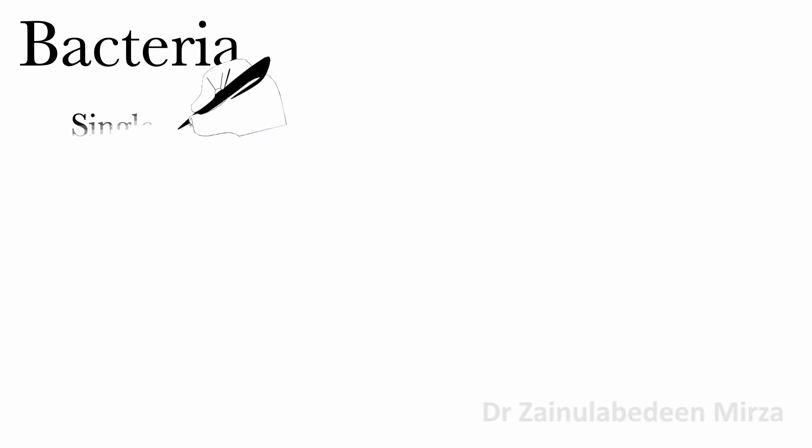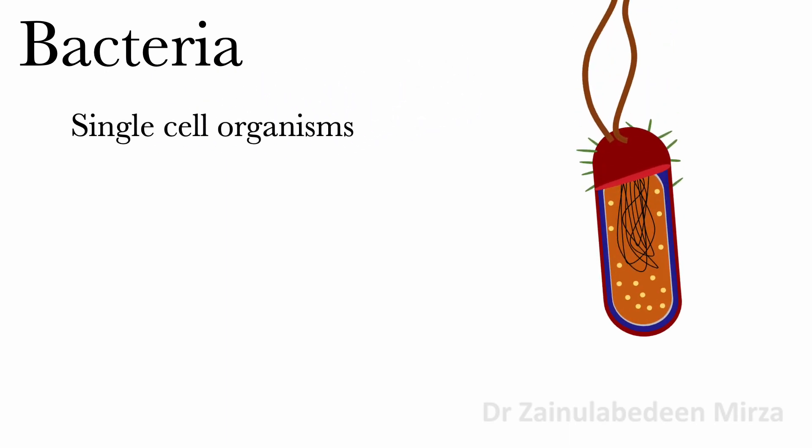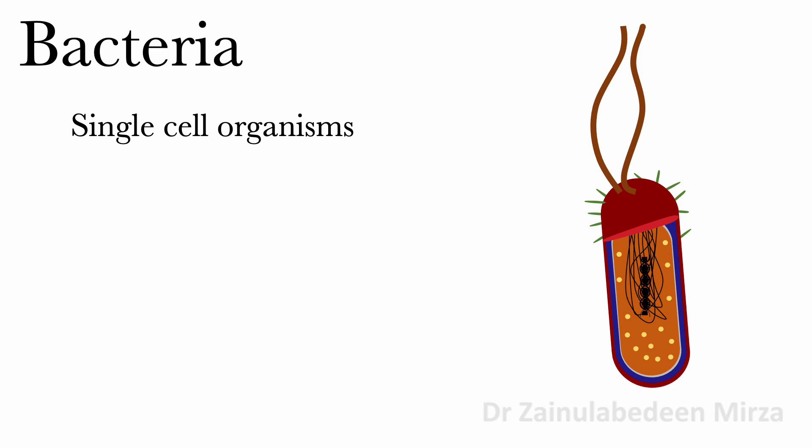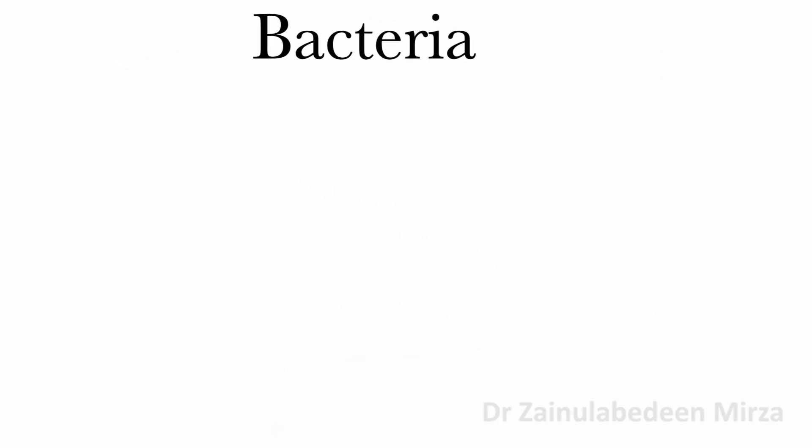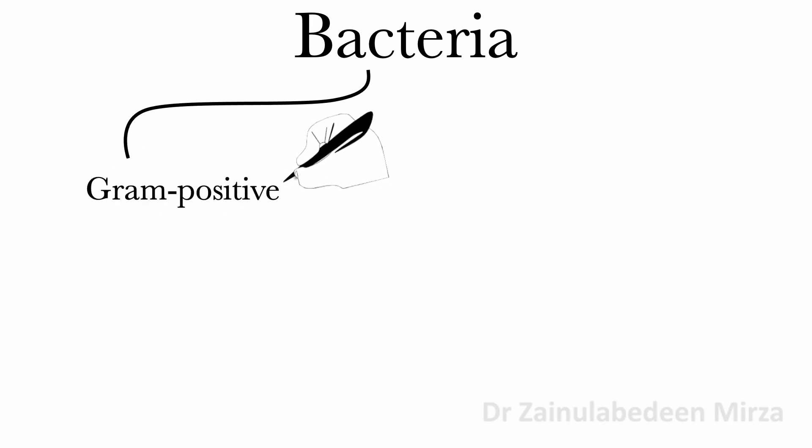Bacteria are single cell organisms with a simple cell structure. Some bacteria have plasmids. Bacteria are divided into Gram-positive and Gram-negative.